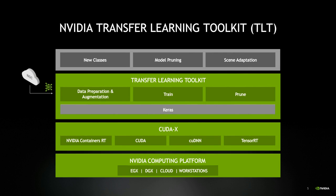At the top of the stack are the things you can do with TLT. This toolkit is geared for developing quick and accurate AI models. You can use TLT to add or remove classes to an already trained model — for example, a model that detects cars, trucks, and buses can easily be extended to detect ambulances. TLT can also prune models, removing parameters to reduce model size without compromising accuracy. Finally, you can do scene adaptation to adopt the network to your dataset, point of view, and camera angle.